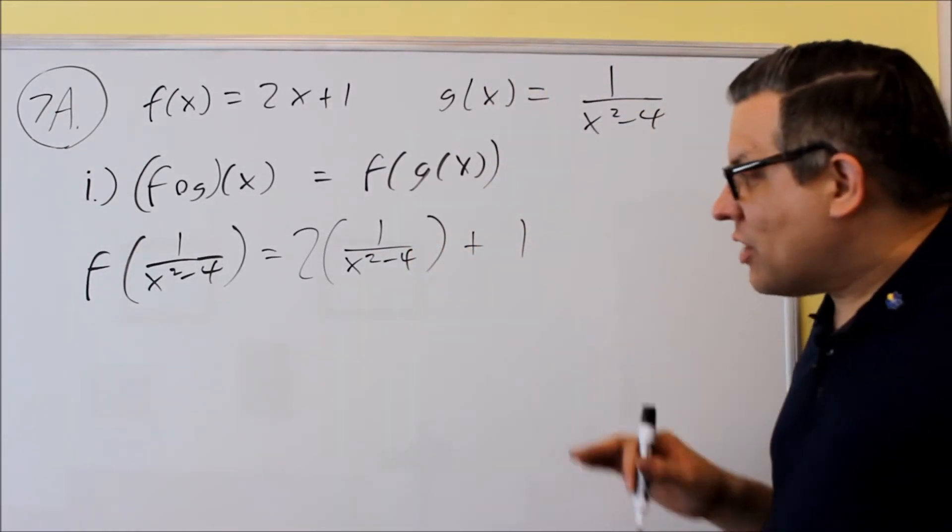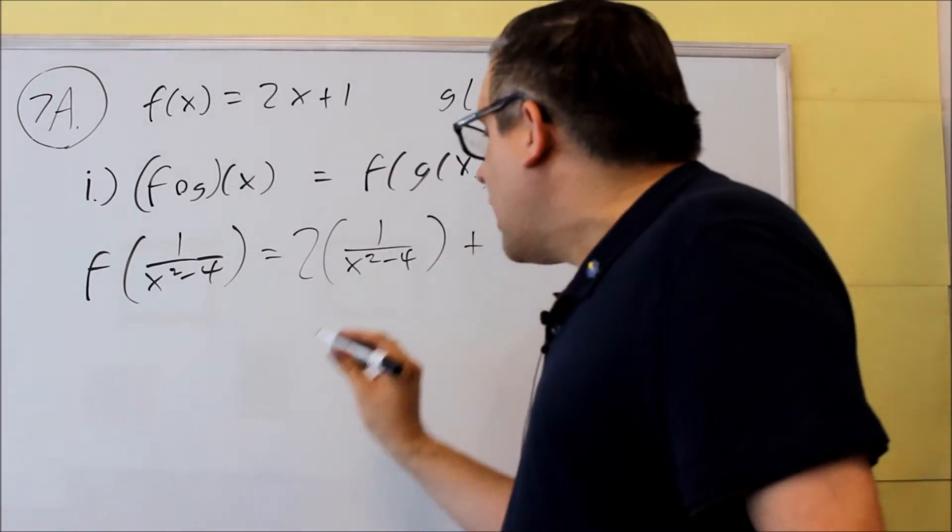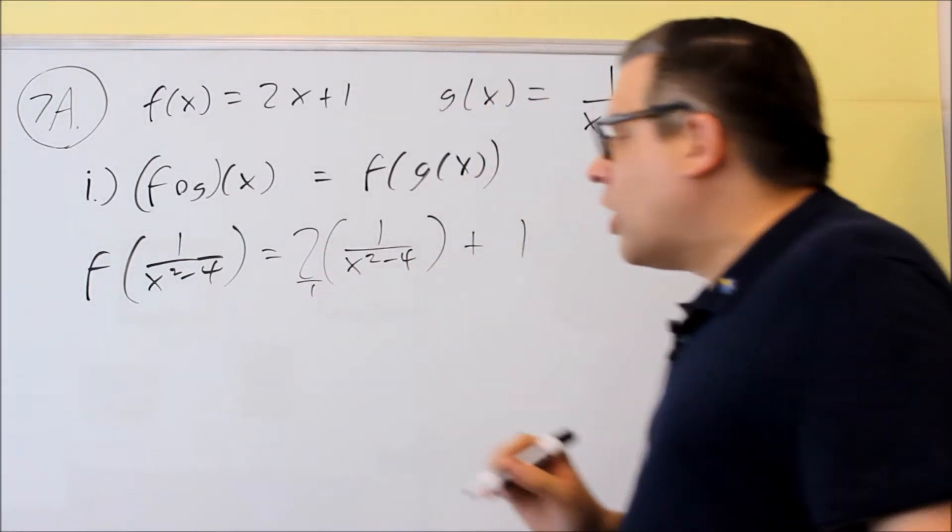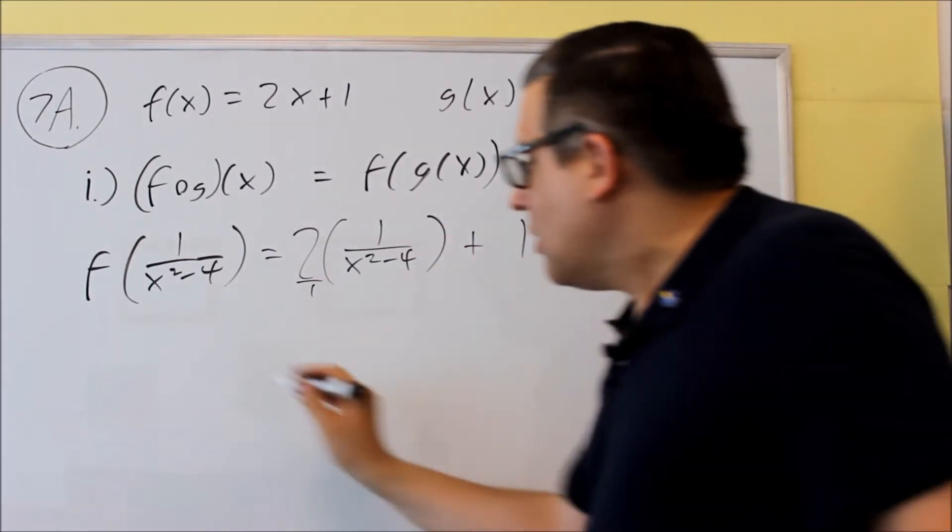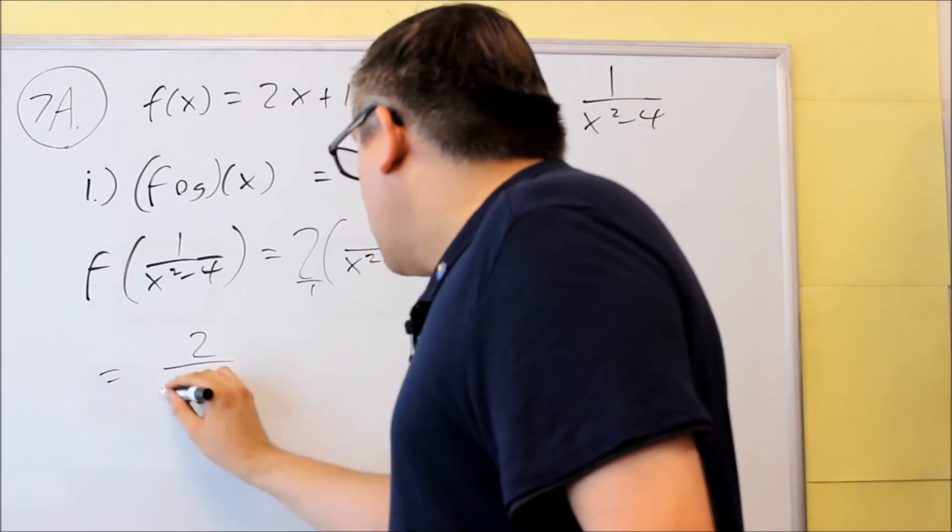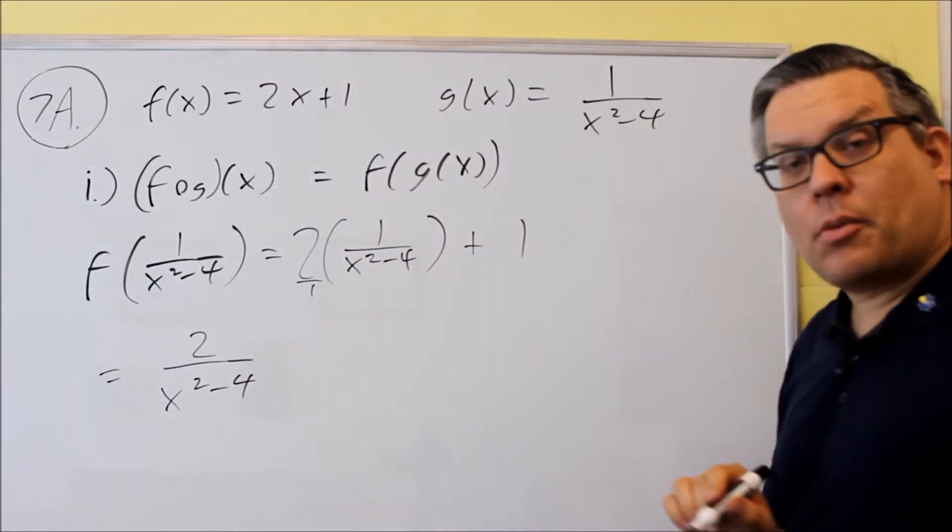The instructions do tell us to write this as a single fraction, so let's do that. So I'm going to multiply this. This is really 2 over 1 that I'm multiplying by, so I'll multiply across the top, across the bottom there. And I'll get 2 over x squared minus 4. We only multiply the top because the bottom number is 1.